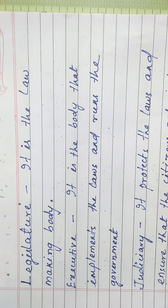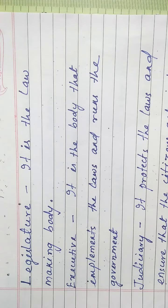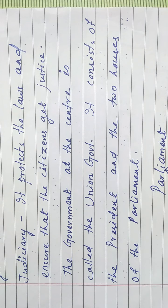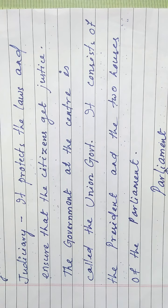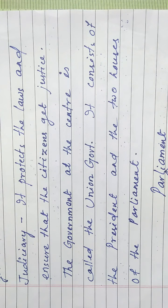What is executive? It is the body that implements the laws and runs the government. What is judiciary? It protects the laws and ensures that the citizens get justice.